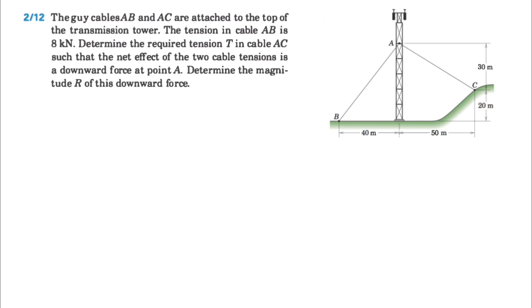We know that the tension in cable AB is 8 kilonewtons. We need to determine the required tension T in cable AC in order to have the net effect of the two cable tensions downward at point A.